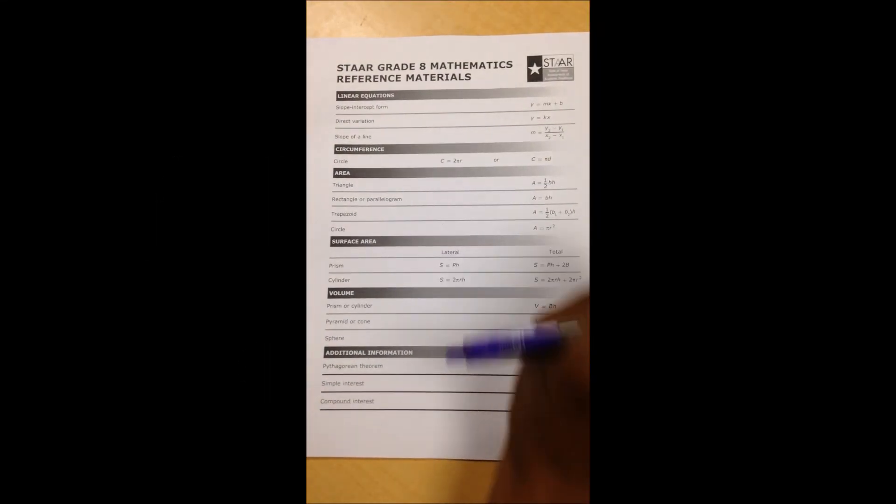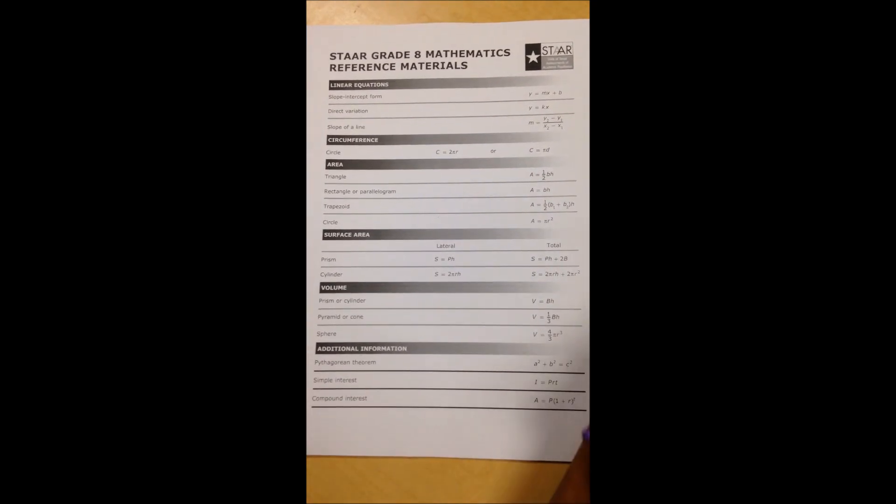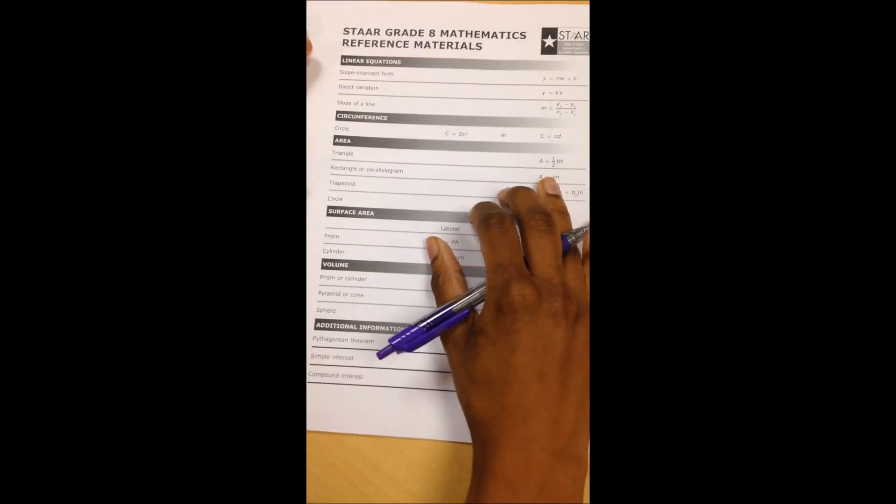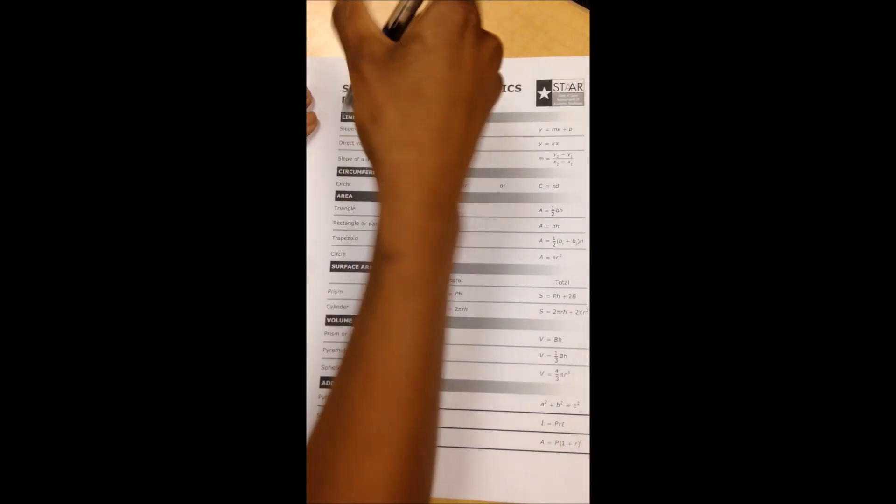Okay, when you get your STAAR reference sheet, there are several things you need to do before you start doing any math. First, write a number line from negative 10 to positive 10.